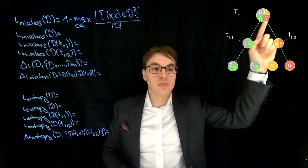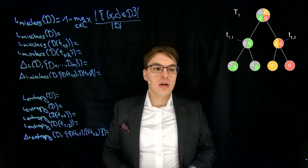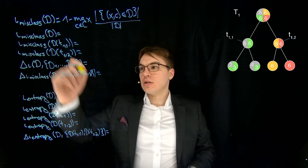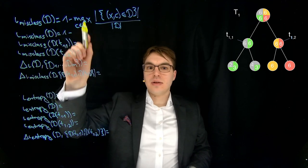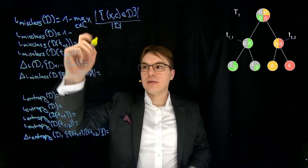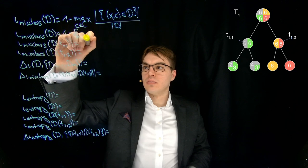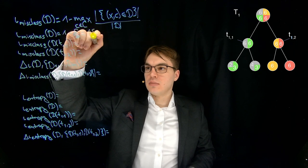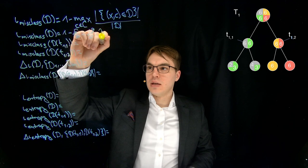The most common class is the green one. We compute 1 minus 6 out of 24, which is the fraction correctly classified. This gives 18 out of 24, or three quarters.